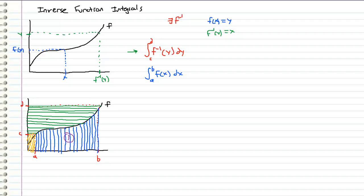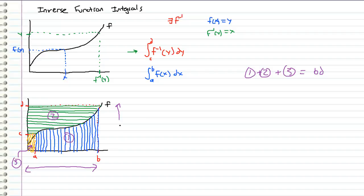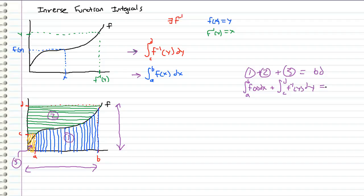If I call this area one and this area two, and then this golden region area three, what I know is that area one plus area two plus area three has to equal b times d — b being the width of this rectangle and d being the total height. Area one is this integral right here, the green area number two is this integral, and area three is just going to be a times c, this little rectangle right here. So I can rewrite that as: the integral of f of x dx from a to b plus the integral from c to d of f inverse of y dy equals bd minus ac.